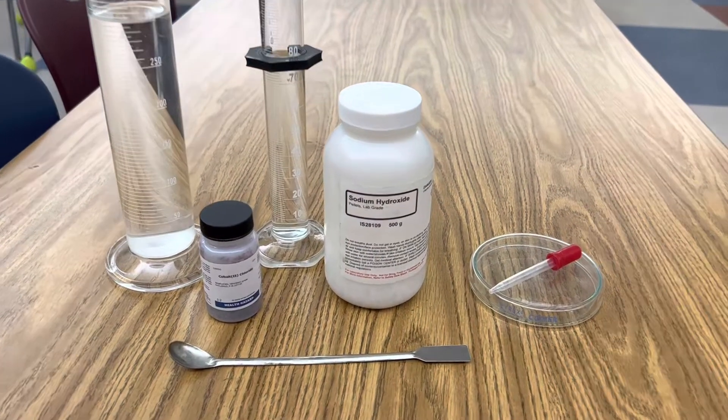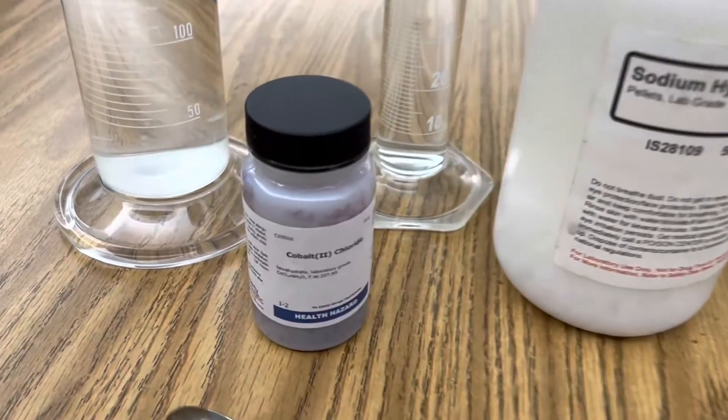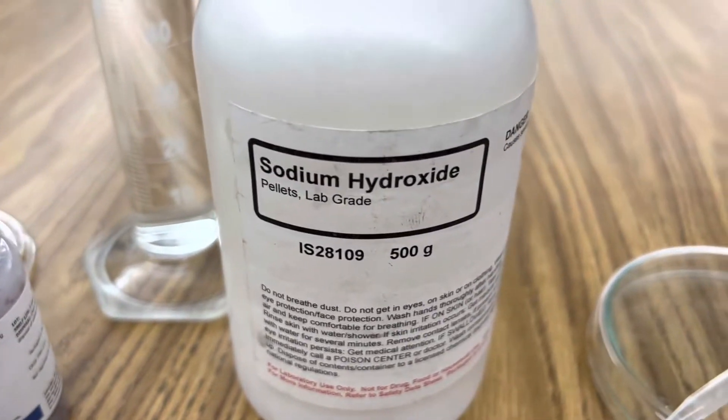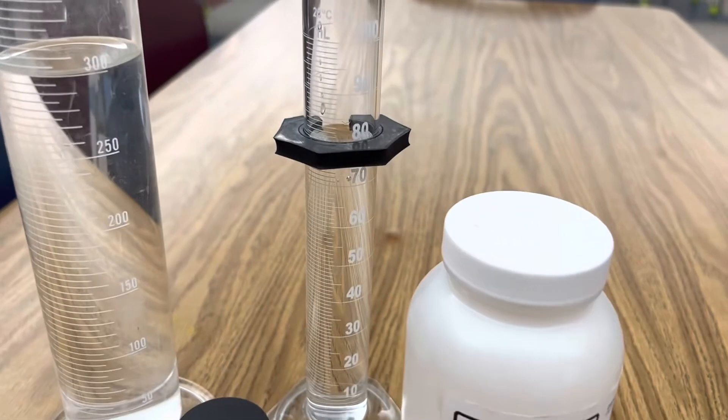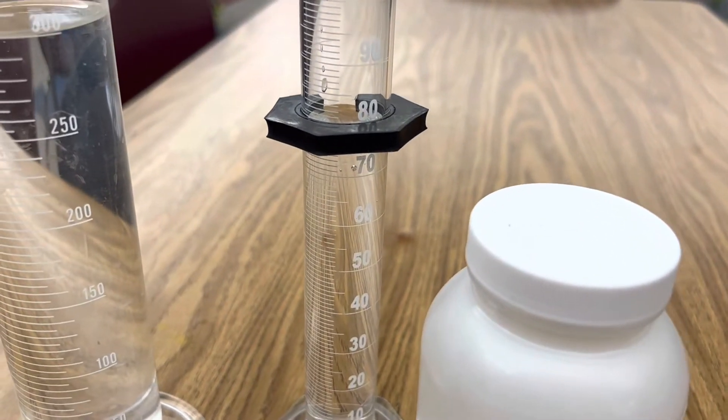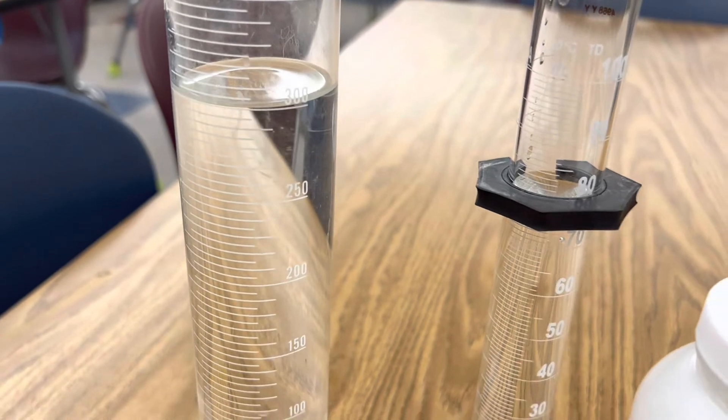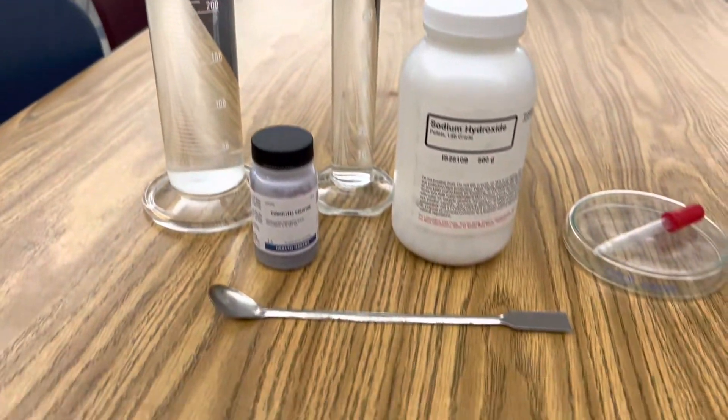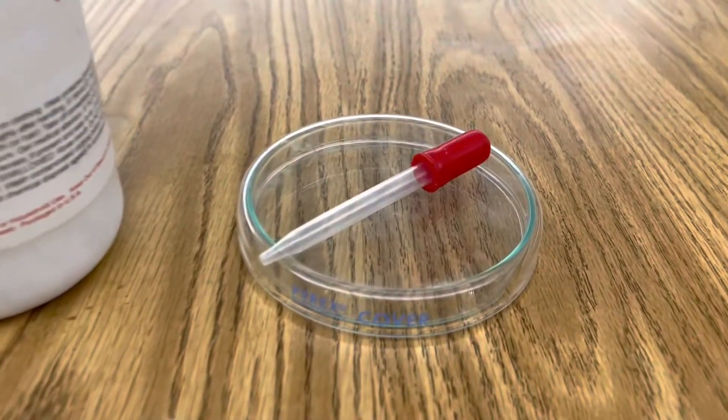So all I'm using in this double displacement precipitation reaction is cobalt chloride, sodium hydroxide, one graduated cylinder with 80 milliliters of distilled water, and another graduated cylinder with 300 milliliters of distilled water, a spoon, a petri dish, and a dropper.